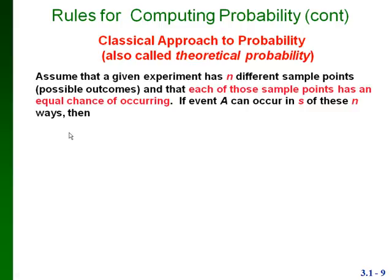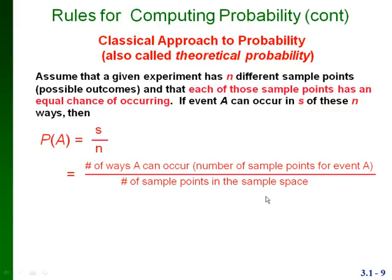The other approach is the classical approach, sometimes called theoretical probability. This assumes that each sample point in the sample space has an equal chance of occurring. To find these probabilities, we take the number of ways A can occur divided by the total number of sample points — or in other words, the number of sample points in our specific event divided by the number of sample points in the entire sample space.